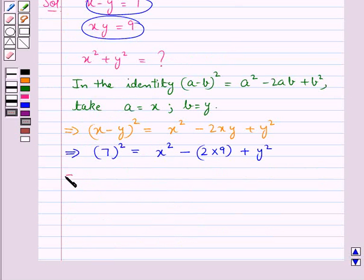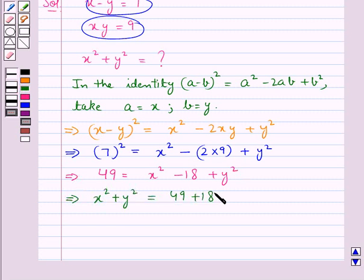So this further gives us 49 is equal to x square minus 18 plus y square. Now from here we get x square plus y square is equal to 49 plus 18.